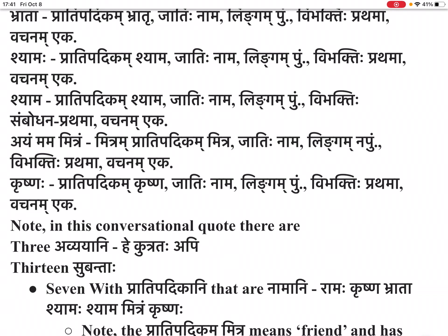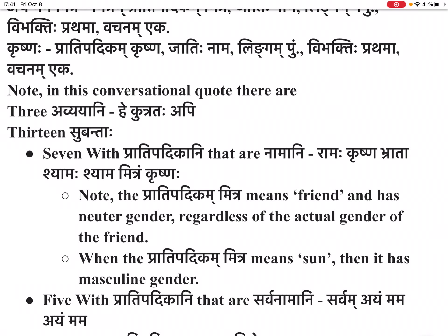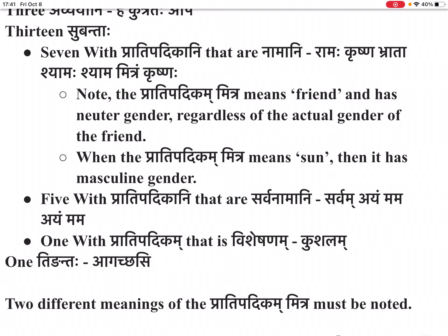Note: in this conversational quote there are three avyayani — he, kutrataha, api. Thirteen subantaha: seven with pratipatikani that are namani — Ramaha, Krishna, bhrata, Shamaha, Shama, mitram, Krishnaha. Note that pratipatikam mitra means 'friend' and has neuter gender regardless of the actual gender of the friend; when pratipatikam mitra means 'son' it has masculine gender. Then there are five subantaha with pratipatikani that are sarvanamani — sarvam, ayam, mamma, ayam, mamma. Then one subantaha with pratipatikam visheshanam — kushalam. And one tingantaha — agachasi.